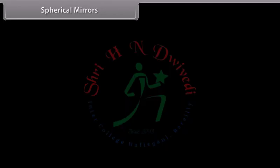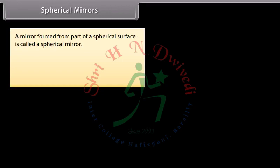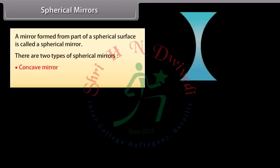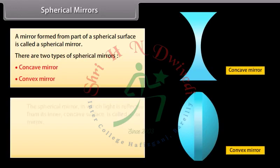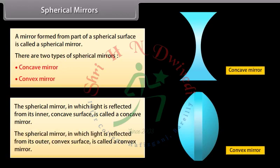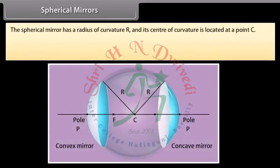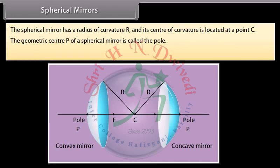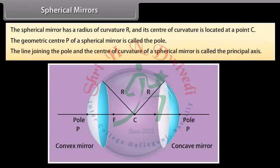A mirror formed from part of a spherical surface is called a spherical mirror. There are two types: a concave mirror, in which light is reflected from its inner concave surface, and a convex mirror, in which light is reflected from its outer convex surface. The spherical mirror has a radius of curvature R, and its center of curvature is located at point C. The geometric center P is called the pole, and the line joining the pole and the center of curvature is called the principal axis.